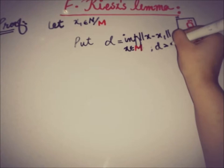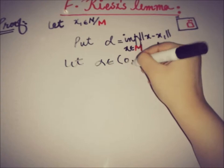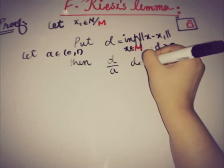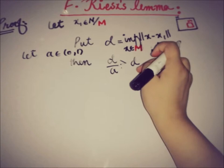Since d > 0 and a is a number strictly between 0 and 1, we have d/a strictly greater than d. By the property of the infimum, there exists an element x₀ in M such that the norm of x₀ − x₁ is less than or equal to d/a.